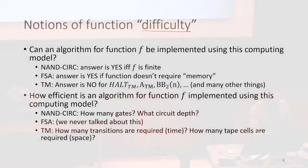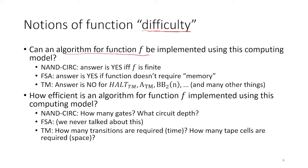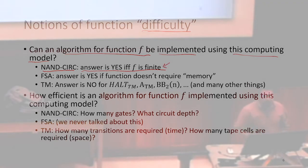We've already looked at one way of defining how difficult it was to compute some problem or function, which is based on whether or not it could be computed by some model of computation. So one way we could ask how difficult it is to compute this function is: can we implement that function using some model of computation? For instance, I could answer this question of how difficult is F by saying whether or not I could compute F using a NAND circuit. We can compute F using a NAND circuit if and only if F was a finite function — so we have a pretty nice clear answer there. We also vaguely mentioned something for finite state automata.